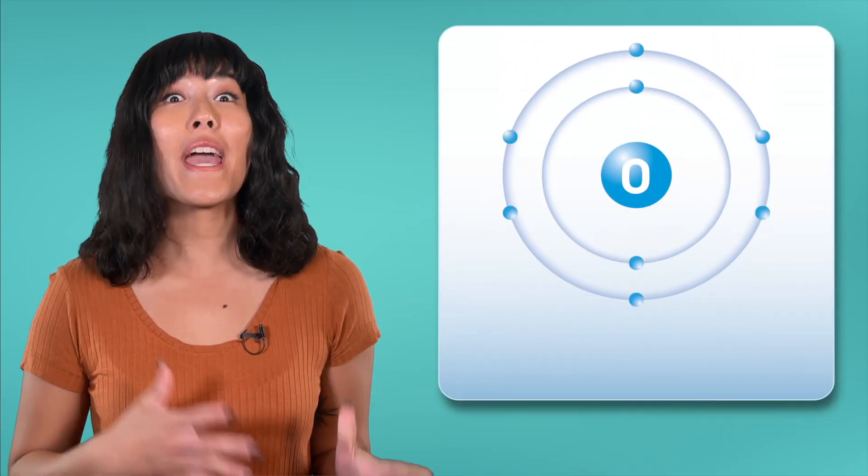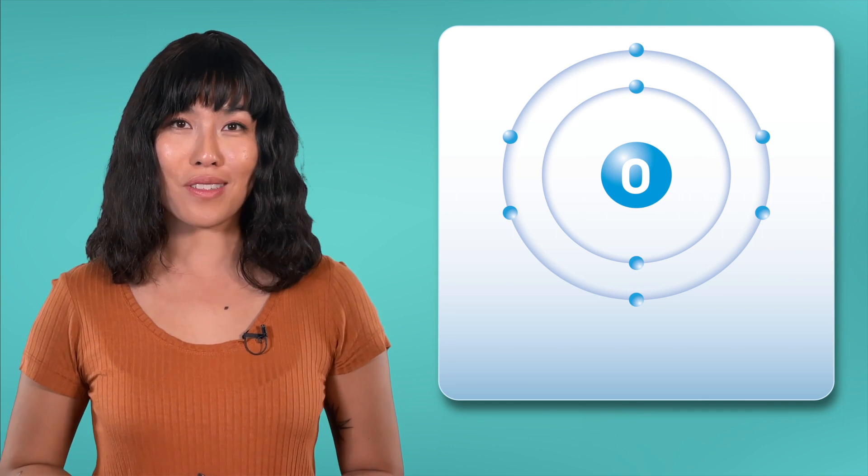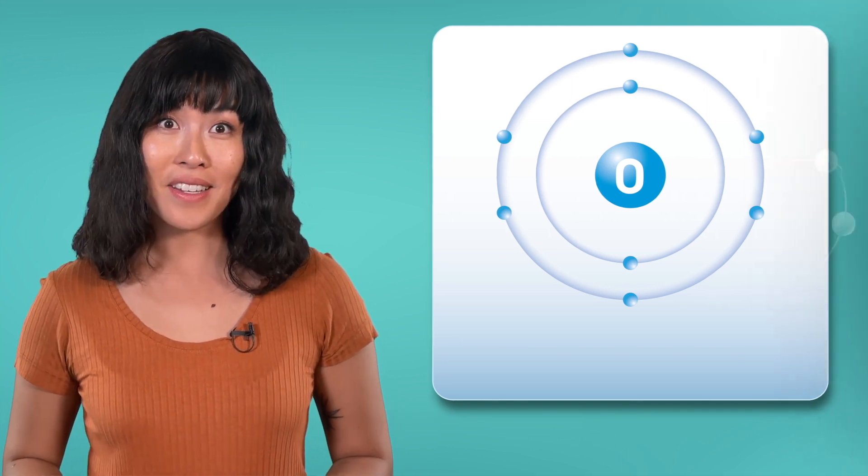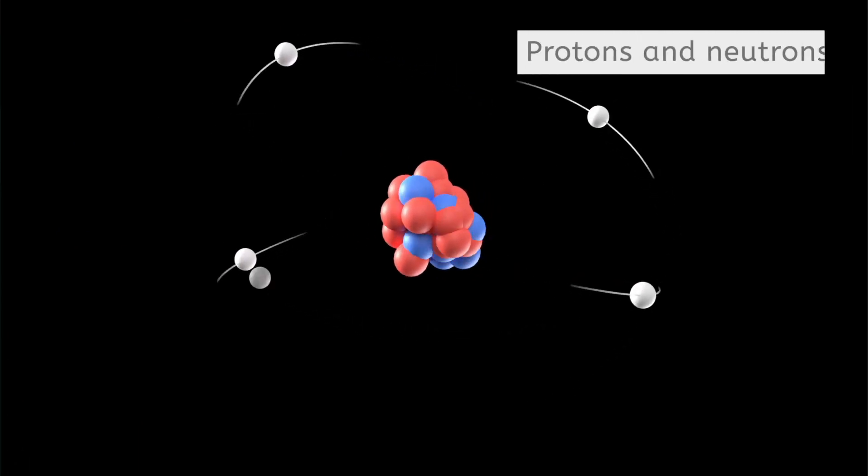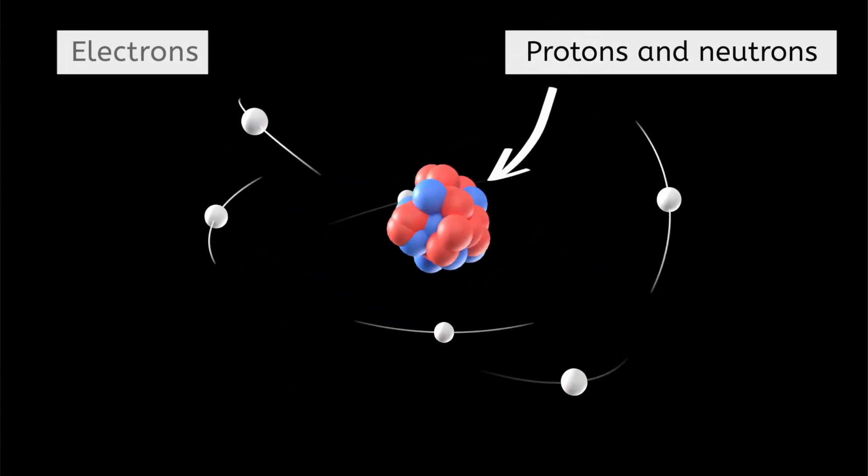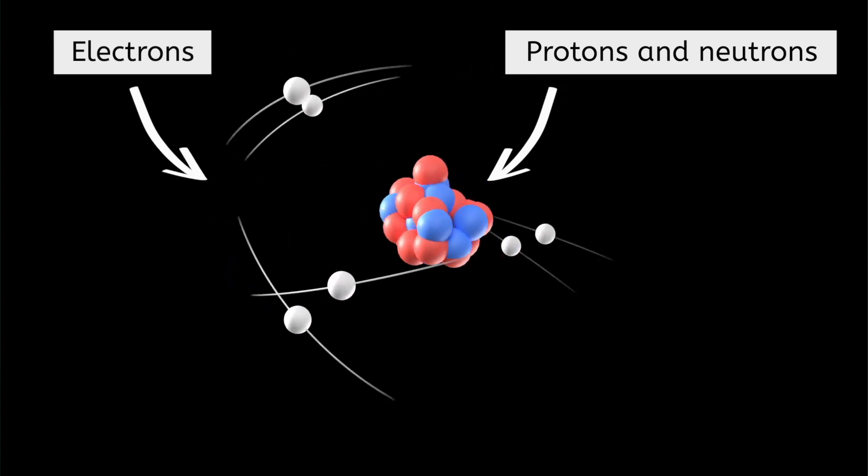Before we can understand lightning, we have to know about electrical charge. And to understand electrical charge, we'll have to revisit a topic we learned about way back at the beginning of this course. Do you remember learning about the parts of an atom? We learned that protons and neutrons make up the nucleus, while the electrons go zipping around the outside.